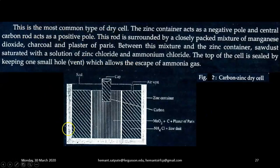This is the most common type of dry cell. The zinc container acts as a negative pole and the central carbon rod acts as a positive pole. This rod is surrounded by a closely packed mixture of manganese dioxide, charcoal and plaster of Paris.